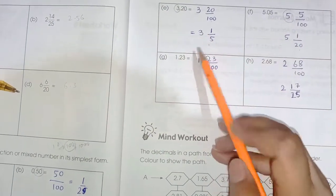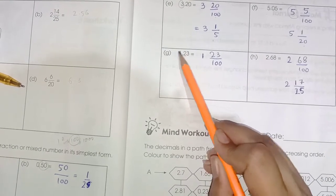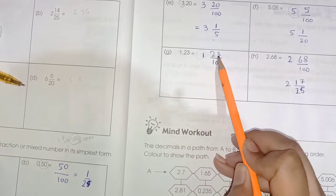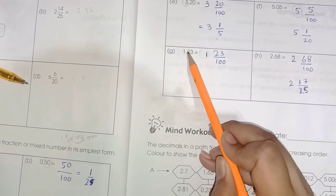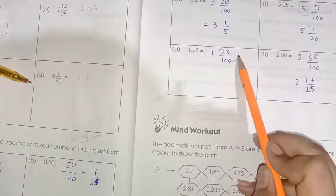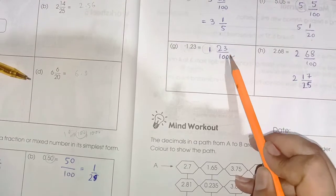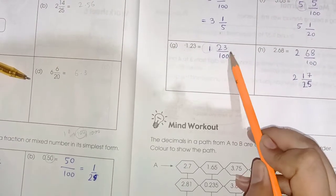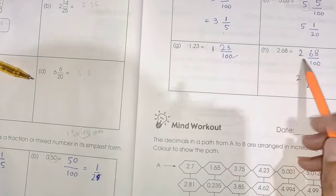And then we have 1.23. 1 is the whole number, 23/100 - one, two, three - that's why we take 100. We cannot cut these numbers, so this is the simplest form of the decimal.